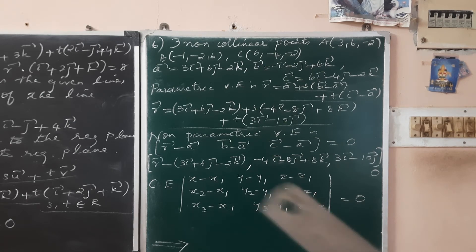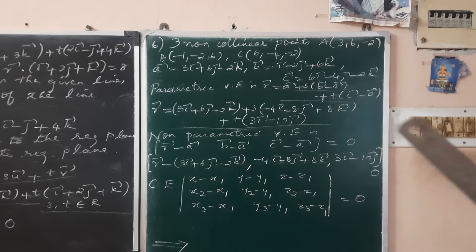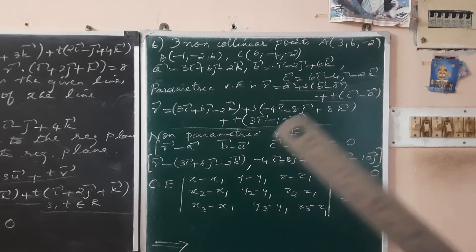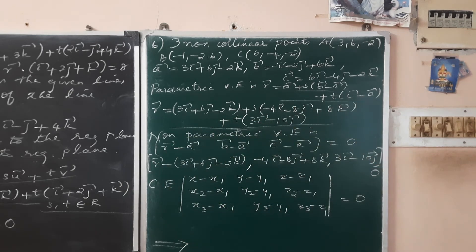For the non-parametric vector equation, the formula uses the scalar triple product: (r minus a), (b minus a), (c minus a) — set the determinant to zero. You can learn the everyday portions and answers.